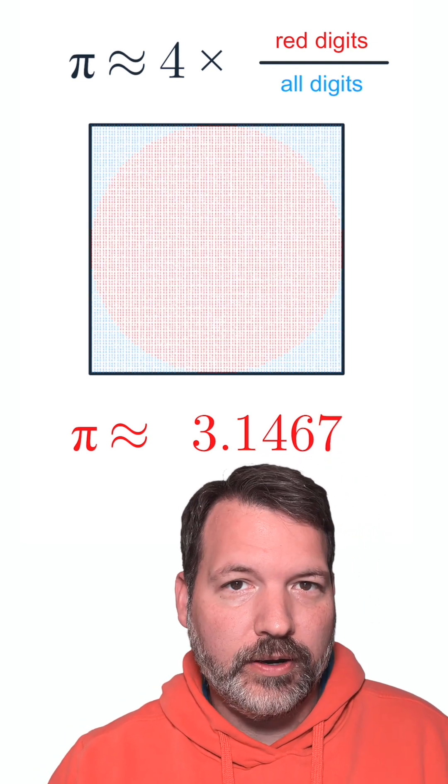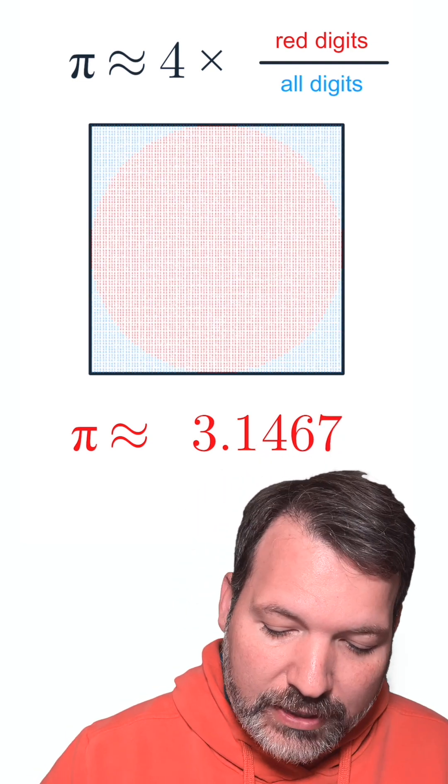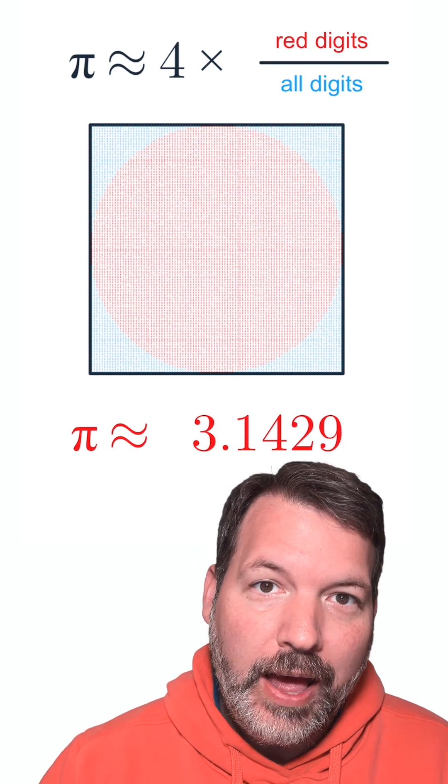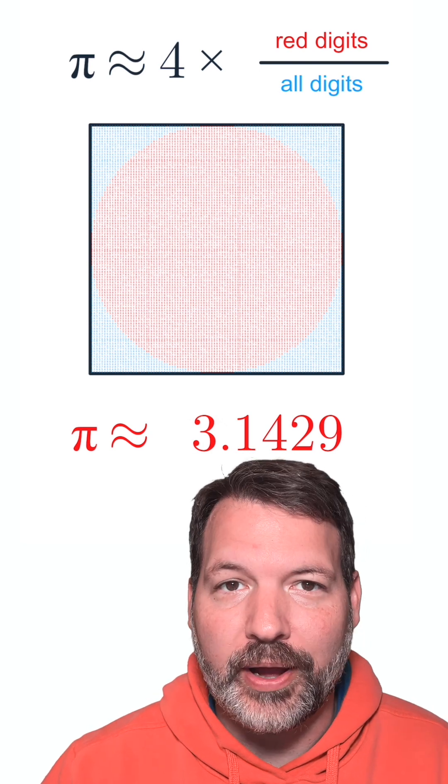Now, the way that I'm calculating pi here is I'm counting up the number of red digits, those digits making up a circle inside of this square. I'm dividing by the total number of digits, and I'm multiplying by four.